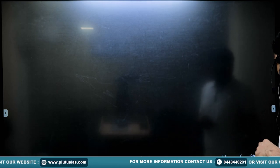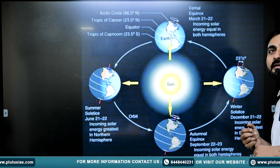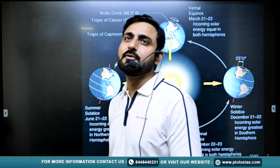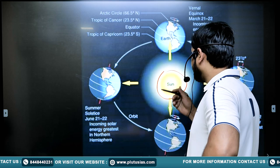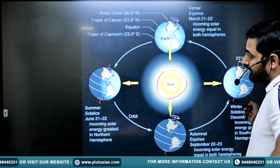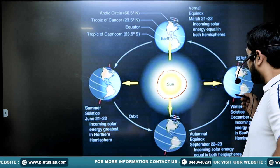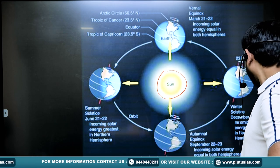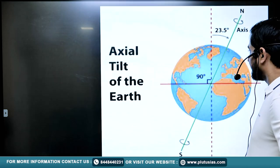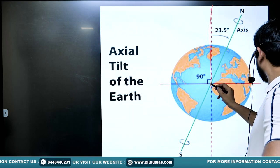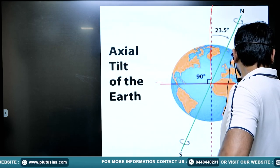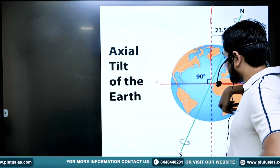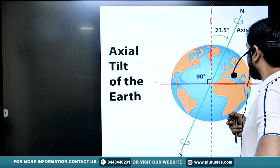I hope the confusion about whether Earth has a spherical or flat shape is now clear to you. Now we are moving towards another topic: Earth being spherical in nature, its axis is tilted around 23 and a half degrees from the perpendicular to the plane of orbit. The plane of orbit is the plane in which Earth is orbiting around the Sun.